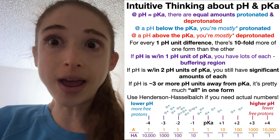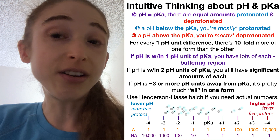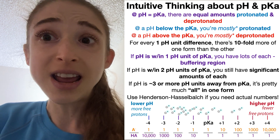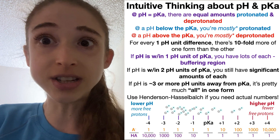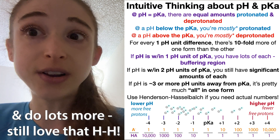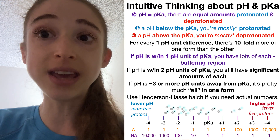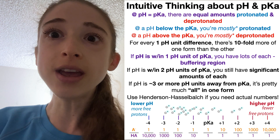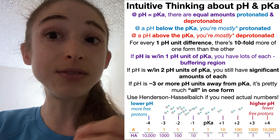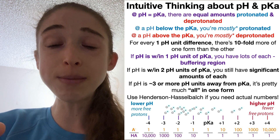Those equations are great if you need to put actual numbers to things, but typically what you really care about is what proportion of something is protonated or not. I could use the Henderson-Hasselbalch equation to tell me the exact proportion, but if what I really care about is the functional relevance, I can just quickly look at the pH and the pKa. If the pH is at the pKa, that means I have equal amounts of my conjugate acid and my conjugate base — makes for a great buffer.